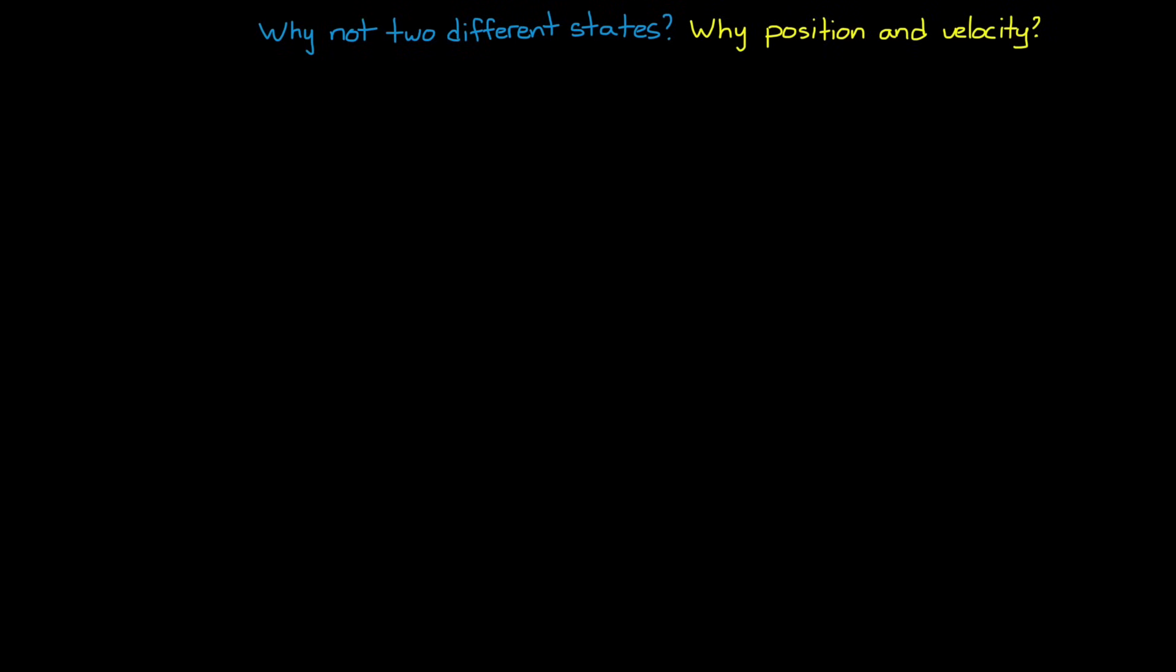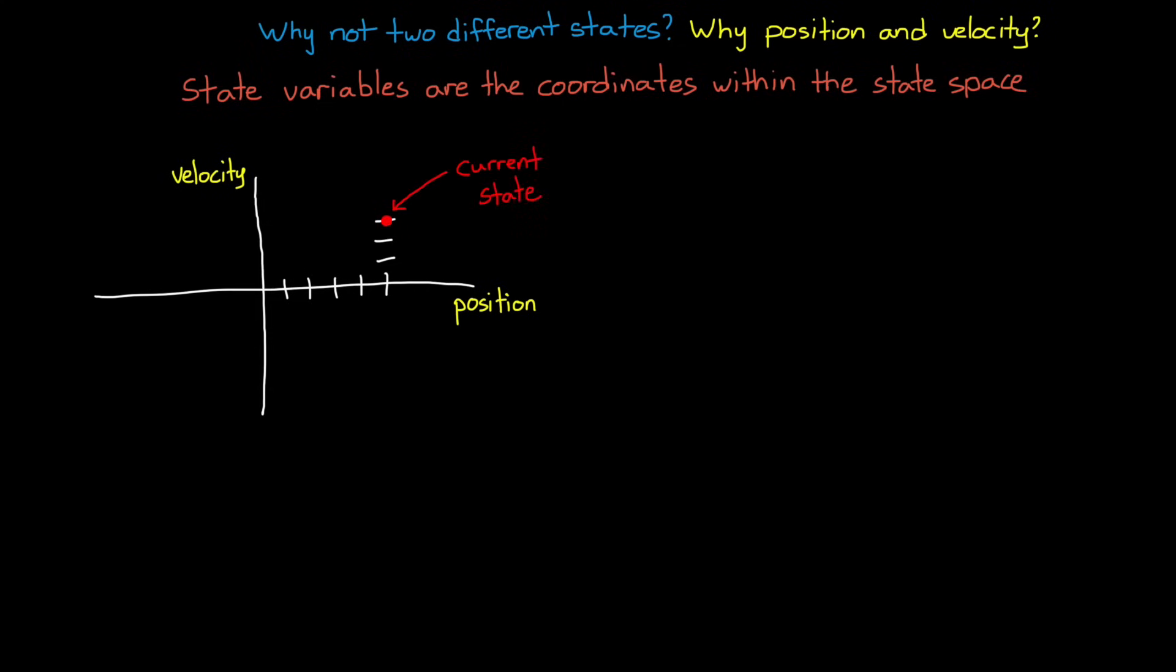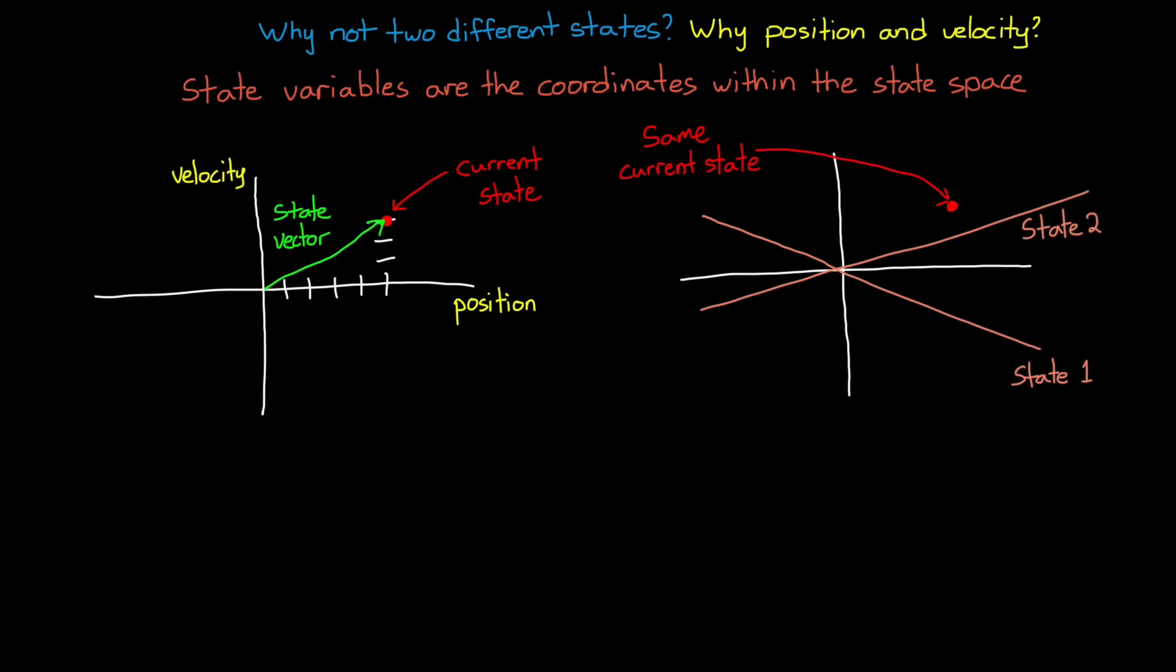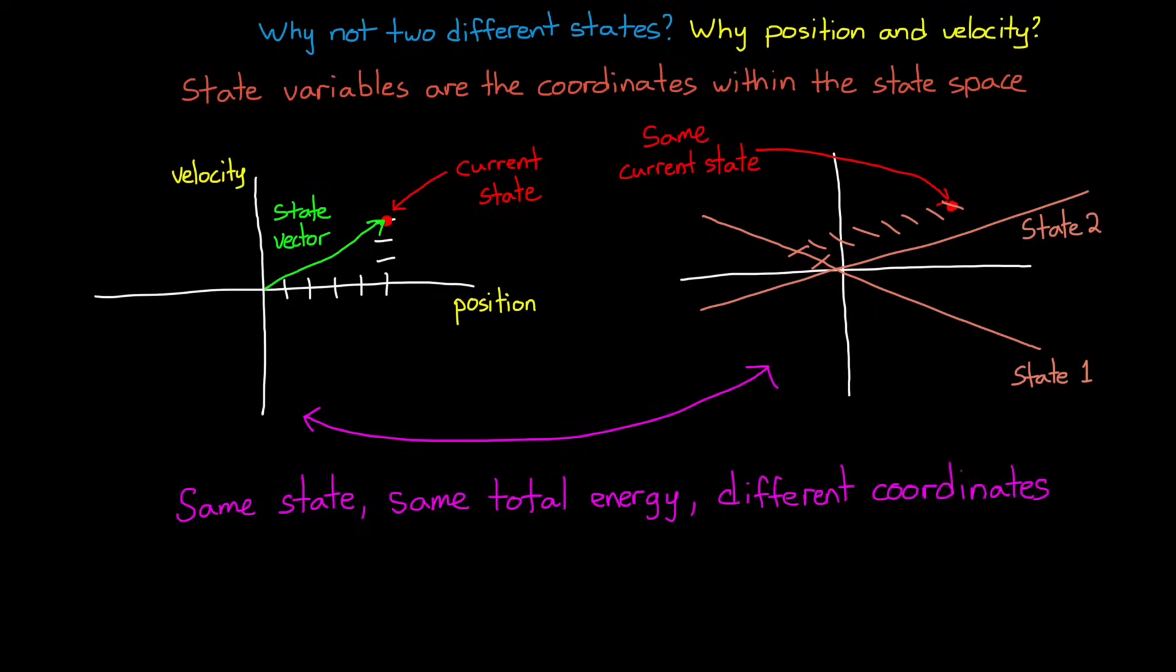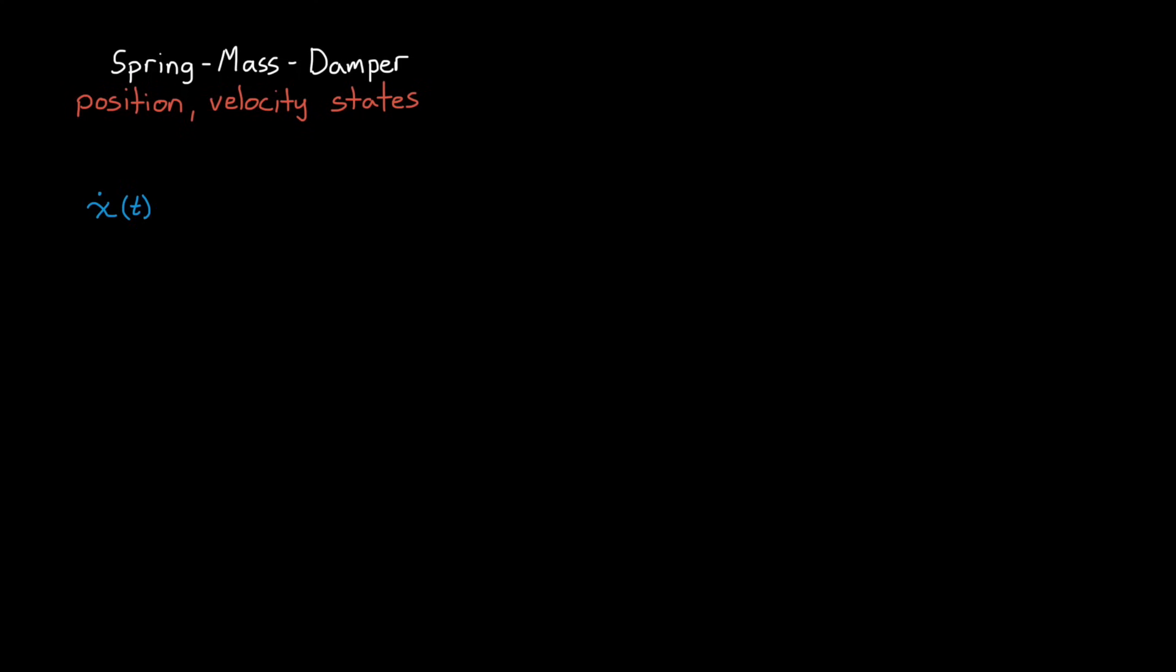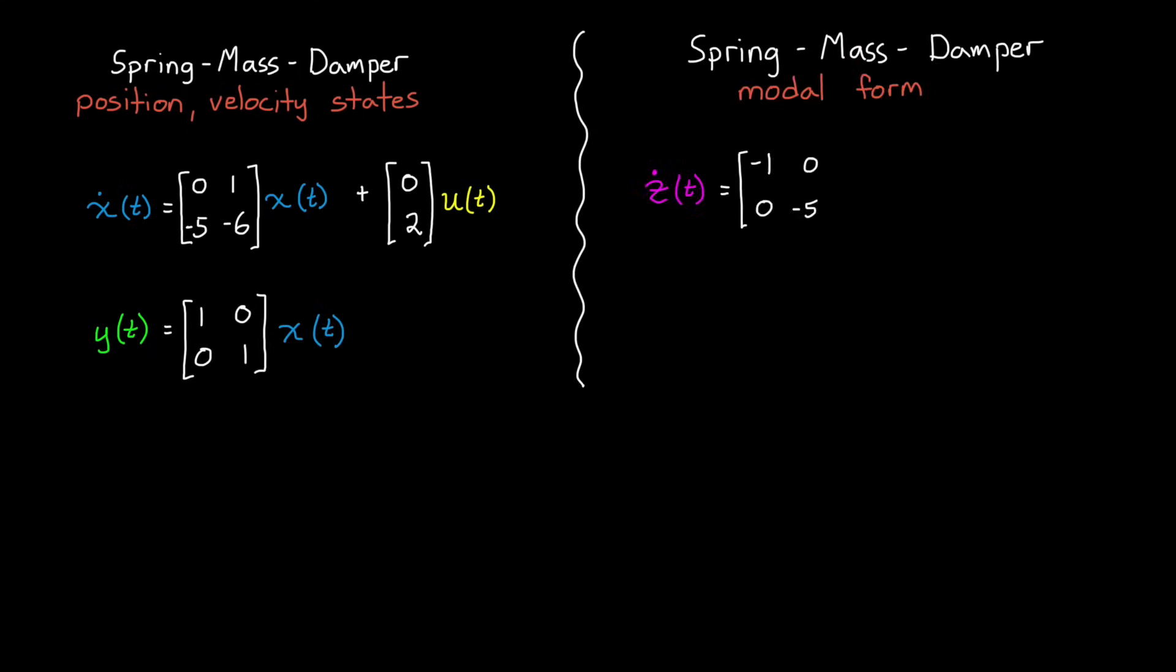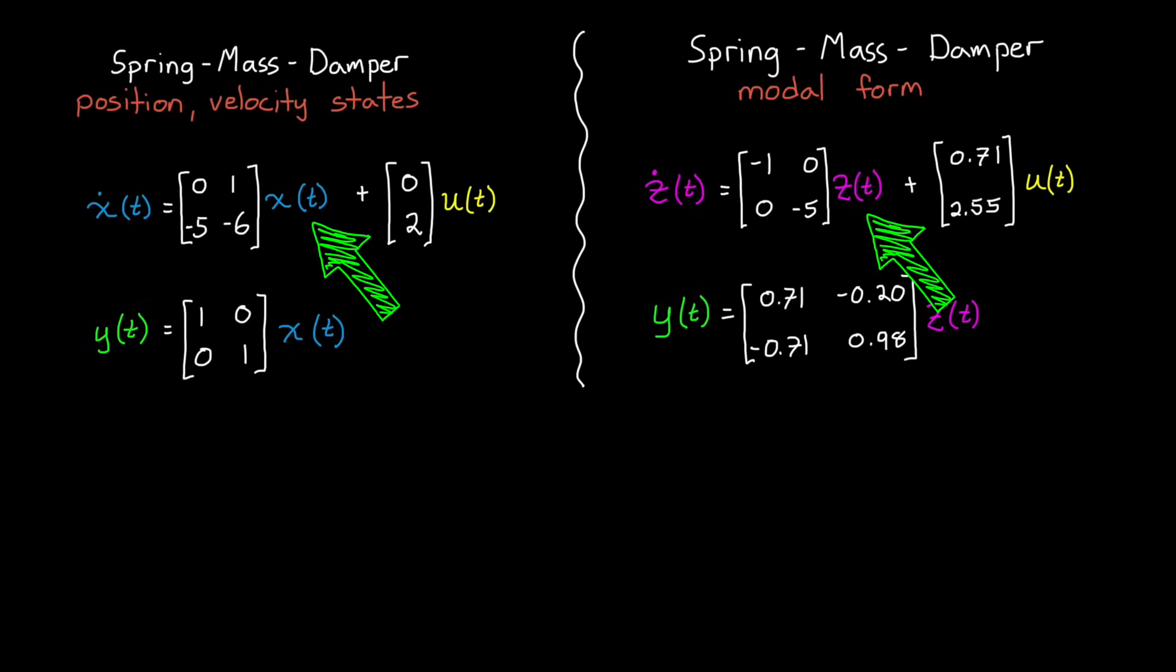So we know the order has to be two, but why not two different states? Why position and velocity? Well, they don't have to be, and here's where things can get a little confusing. The state variables, position and velocity, can be thought of as coordinate systems within a state space. Go over five position units, and up three velocity units. This point in the state space is the current state of the system, and the state vector describes that location. But we can describe this location in the state space with any two linearly independent variables. Some arbitrary state one and state two. We're going to end up with the same system state in the end, it's the same energy, just with different coordinates. And we do this redefining of state variables all the time with state space representation. That's what we're doing, for example, when we diagonalize the A matrix to get it into so-called modal form. These two models represent the exact same system, we've just chosen a different set of coordinates, a different basis for our state vector.